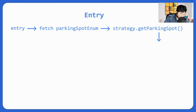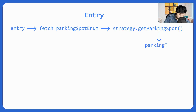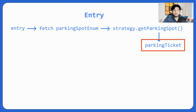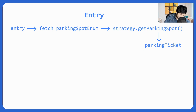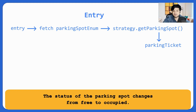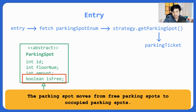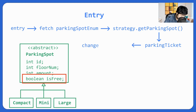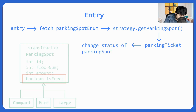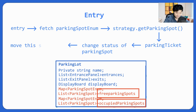Now we have the parking spot — we make the parking ticket and the parking ticket is given. We are done with entry, but one more thing we have forgotten: we have the parking ticket but we haven't updated the display board. First, the status of this parking spot changes from free to non-free — its is_free value changes from true to false. Secondly, this parking spot moves from free parking spots to occupied parking spots.